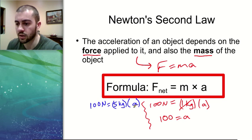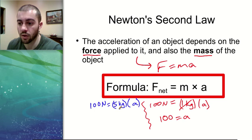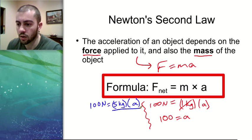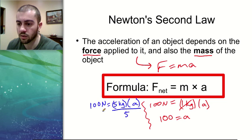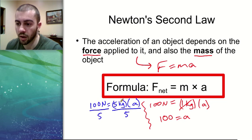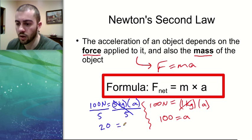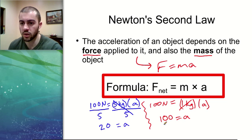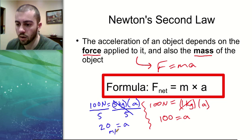If we do the math here, we want to get the acceleration by itself. In order to do that, we have to get rid of this five kilograms. The five is being multiplied, so the opposite would be division. Whatever we do to one side, we have to do to the other side of the equation, so we divide both sides by five. The fives cancel out, leaving us with an acceleration of 20 meters per second squared.